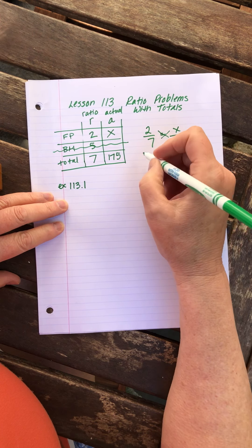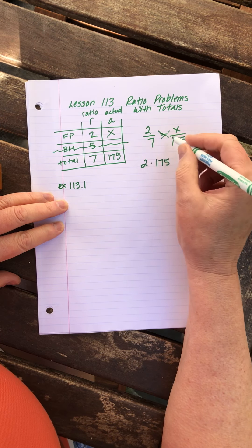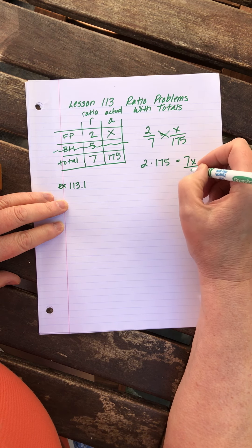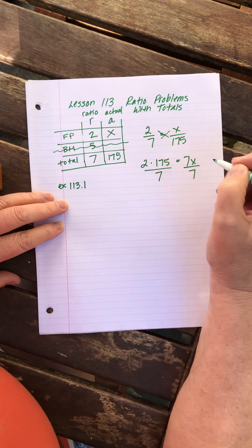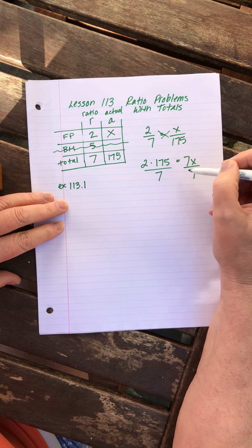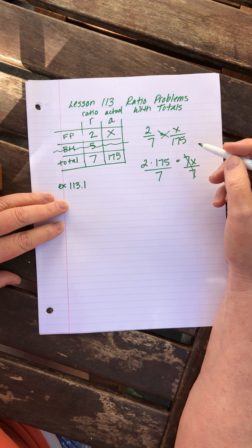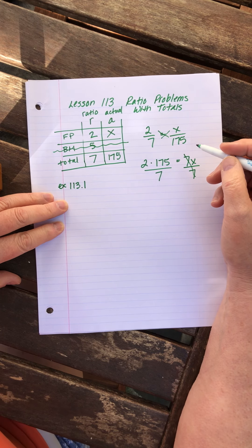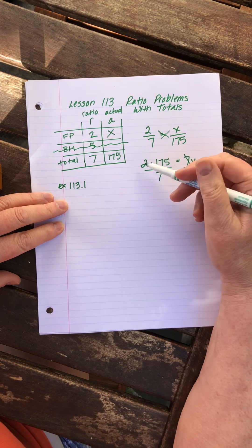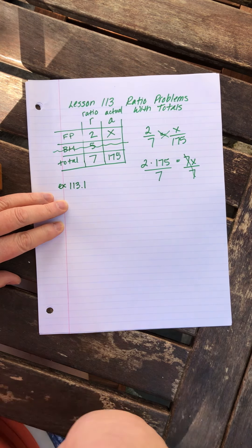We're going to cross multiply and we're going to get 2 times 175. Notice I do not multiply that yet, I just write it out. Equals 7X. And then I'm going to divide both sides by 7. The reason I don't want to multiply these numbers is because this denominator that's going to come over in a minute very often will go into one or the other of those numbers, and so I don't want to make my numbers bigger before I get a chance to see if I can cancel.